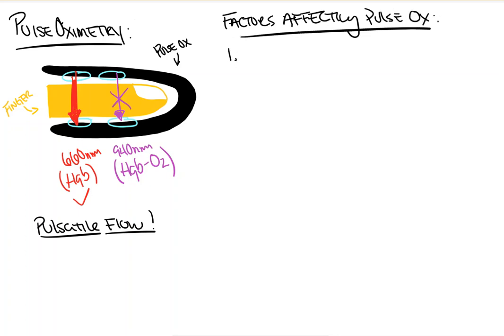So for starters, anything that alters blood flow through the area in which the monitor is placed can give you a bad reading. Again, we mentioned that it's dependent on pulsatile flow, so if you cut off that flow, you'll mess up the reading. So interruptions in flow.